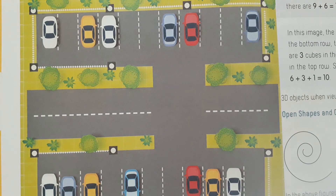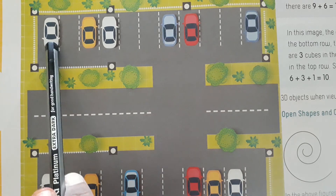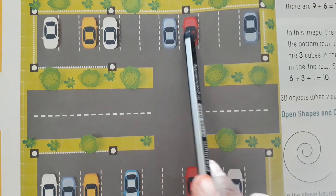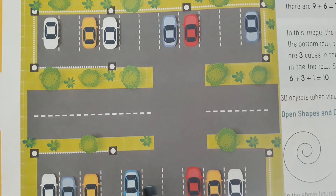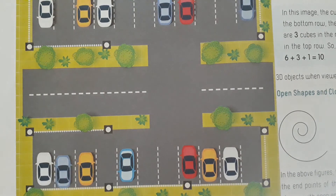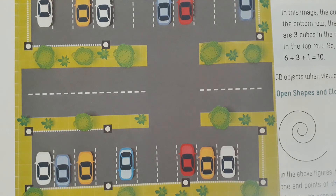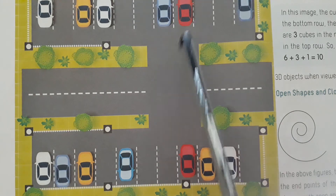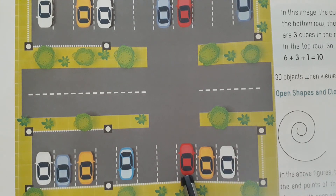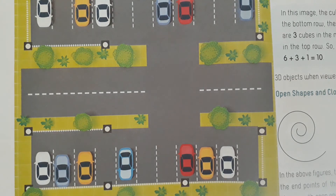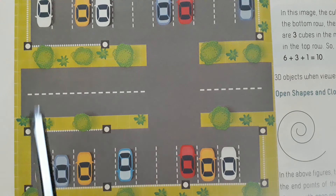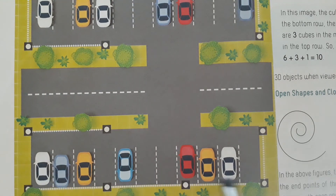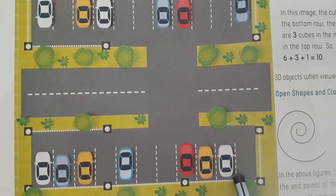How many cars are there in the parking lot, children? Count: 1, 2, 3, 4, 5, 6, 7, 8, 9, 10, 11, 12 — there are 13 cars. How many red cars are there? 1, 2 — two red cars. Can you count the number of white cars? 1, 2, 3, 4 — four white cars.